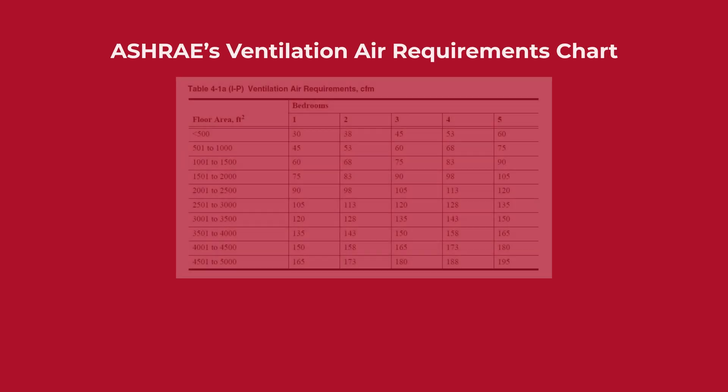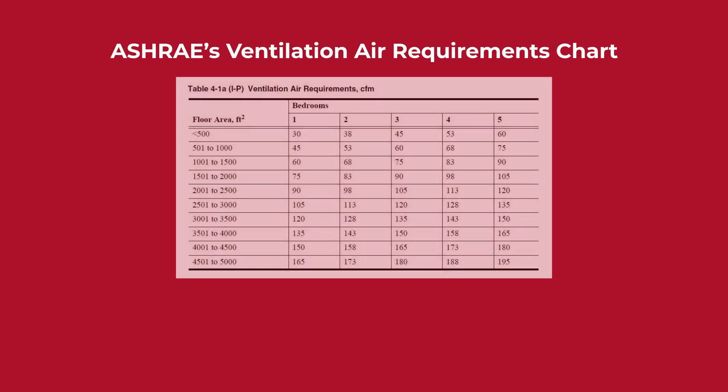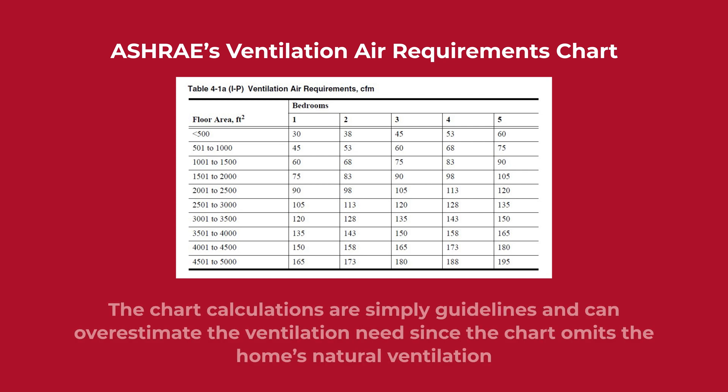ASHRAE's ventilation air requirements chart is a reference point to estimate a home's ventilation requirements, but the chart calculations are simply guidelines and can overestimate the ventilation needs, since the chart omits the home's natural ventilation.